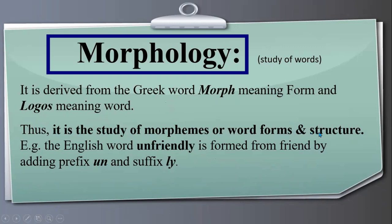For example, the English word 'unfriendly' is formed from 'friend' by adding the prefix 'un' and the suffix 'ly'. So this word can be subdivided into three different parts: the base word 'friend', the prefix 'un', and the suffix 'ly'. This kind of study in a language is called morphology.